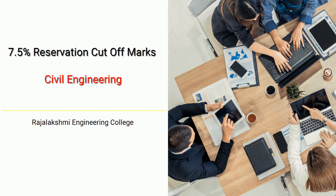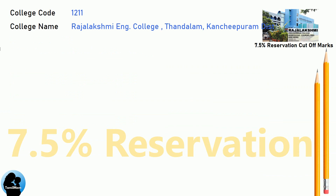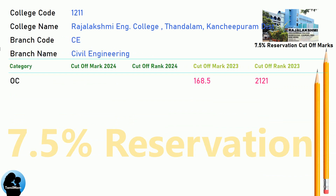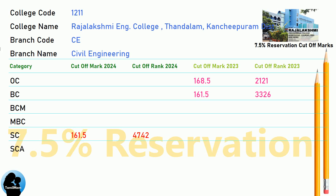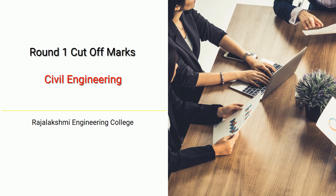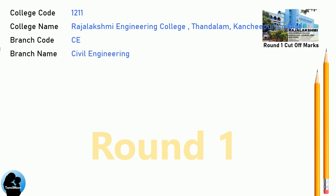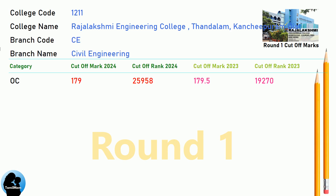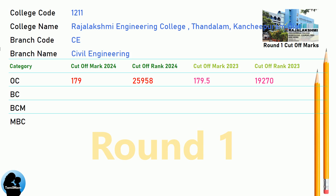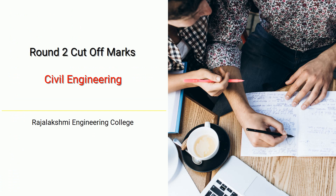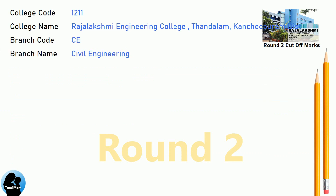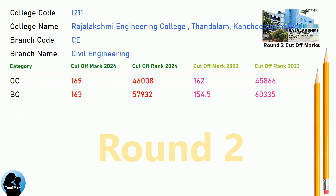DNA 7.5 Reservation Cut-Off for Rajrakshmi Engineering College in Civil Engineering. DNA 8.5 Reservation Cut-Off for Rajrakshmi Engineering College in Computer Science and Design. DNA 9.5 Reservation Cut-Off for Rajrakshmi Engineering College in Civil Engineering.